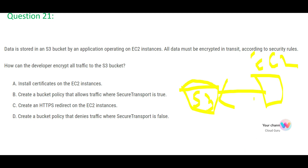The scenario is: you have an EC2 instance with an application that sends data to an S3 bucket, and this transfer has to be encrypted — that is called encryption in transit. The first option says install certificates, but the problem is it tells us to install certificates only on one end, not both. Since this option is incomplete, I would strike it off.